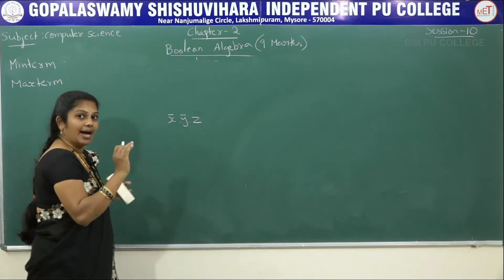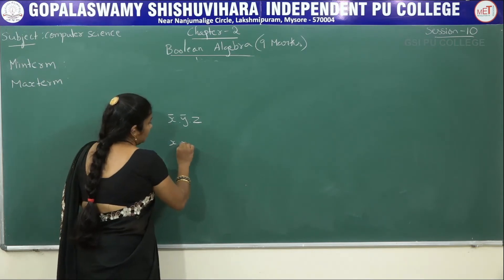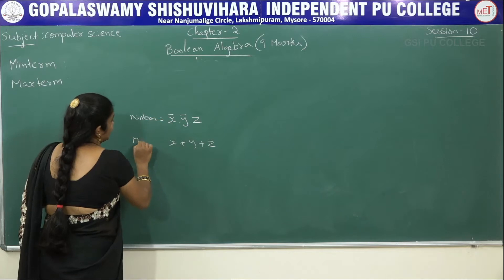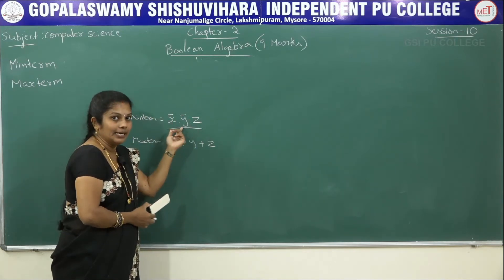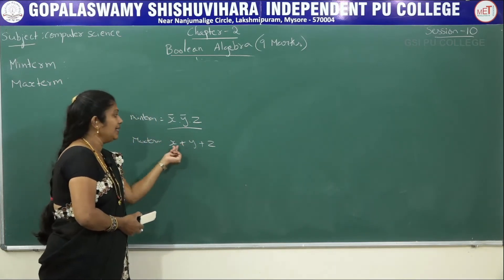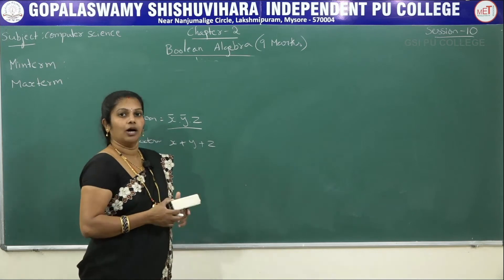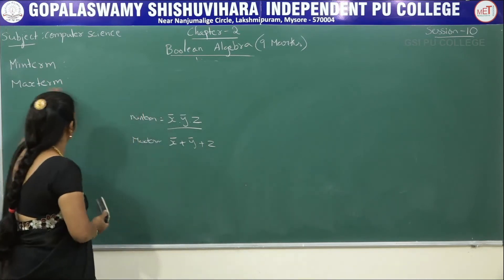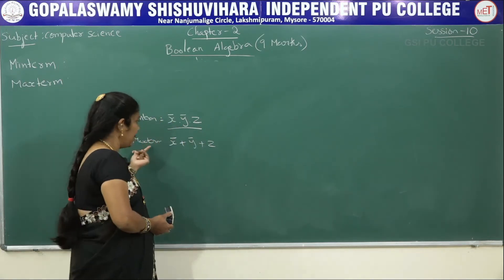Now for maxterm: a maxterm is a sum of all the literals with or without a bar. For example, x plus y plus z. Minterm represents the product of all literals with or without complement, while maxterm is a sum — using the plus operator — of all literals with or without complement. The variable may or may not carry a complement.